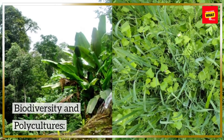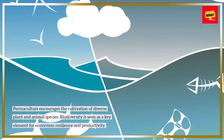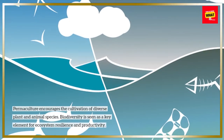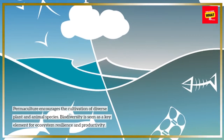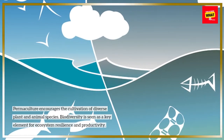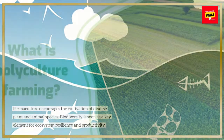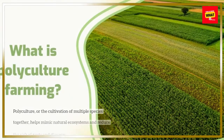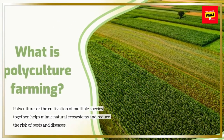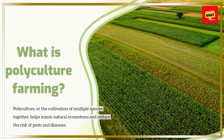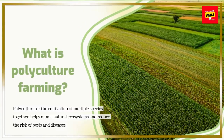Biodiversity and Polycultures: Permaculture encourages the cultivation of diverse plant and animal species. Biodiversity is seen as a key element for ecosystem resilience and productivity. Polyculture, or the cultivation of multiple species together, helps mimic natural ecosystems and reduce the risk of pests and diseases.